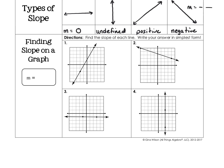Now let's work through four graph examples. To find slope from a graph, locate your two points, connect them with a vertical line and a horizontal line. The vertical line represents the rise and the horizontal line represents the run. Since this line goes upward to the right, the slope is positive.